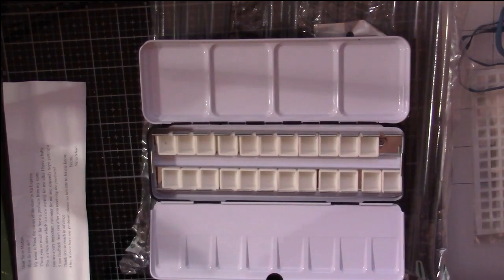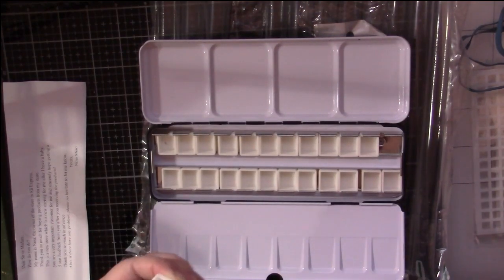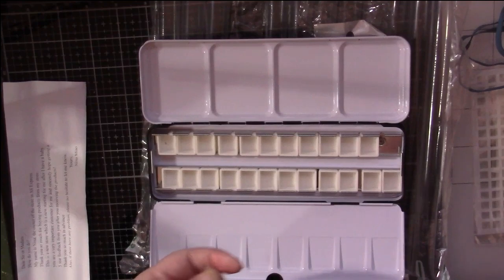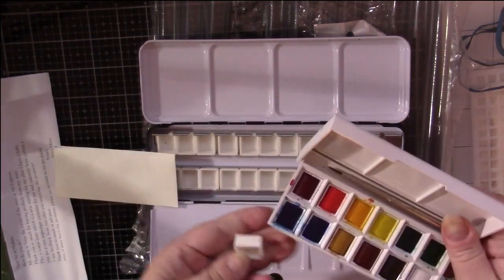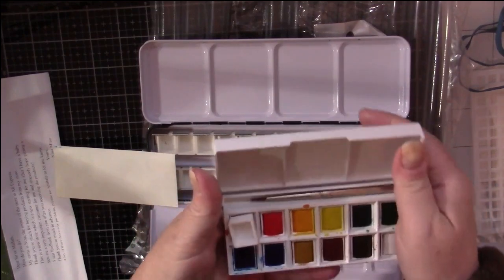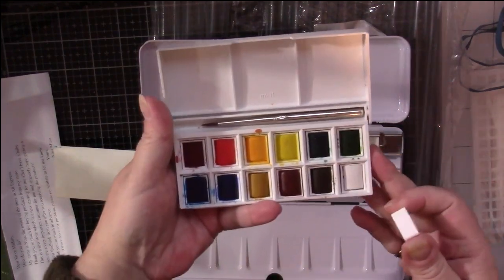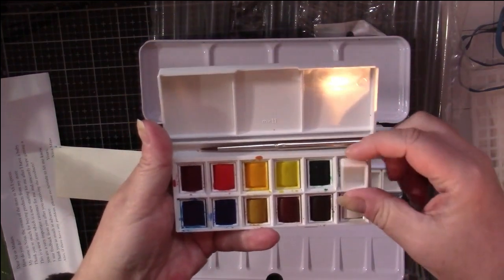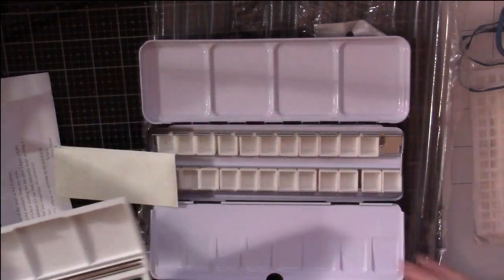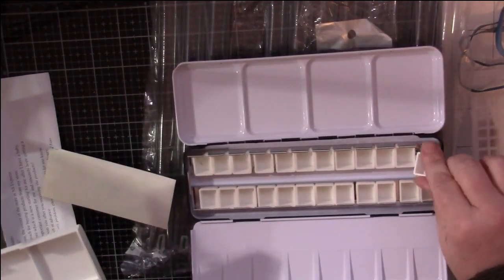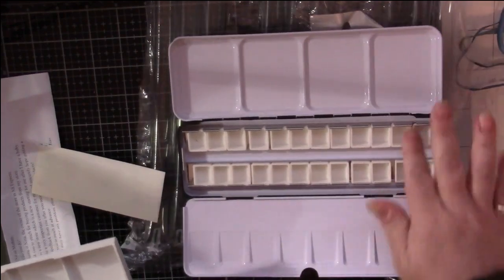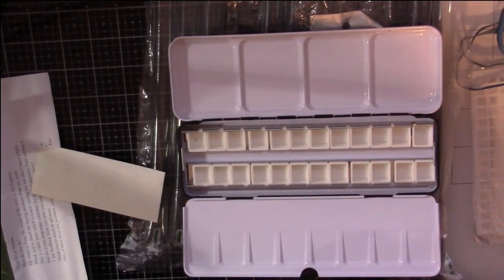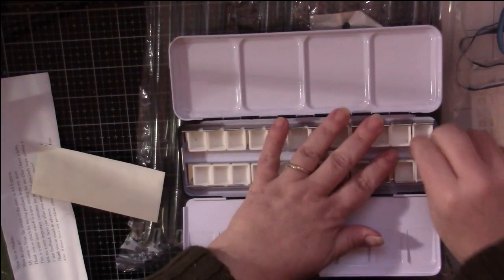So yeah, and the pans in it are quite tiny, but they're probably about a quarter pan I would say. Let's see, I'm gonna take one of these out and compare it to a half pan. Oh no, they are the same size - they are half pans. These are Winsor Newton Cotmans and they just look so tiny with them all in here.